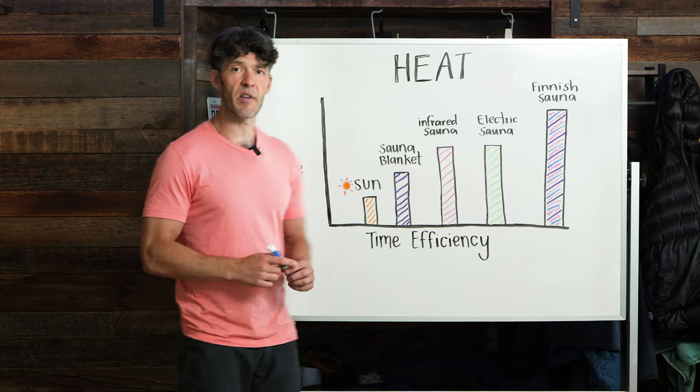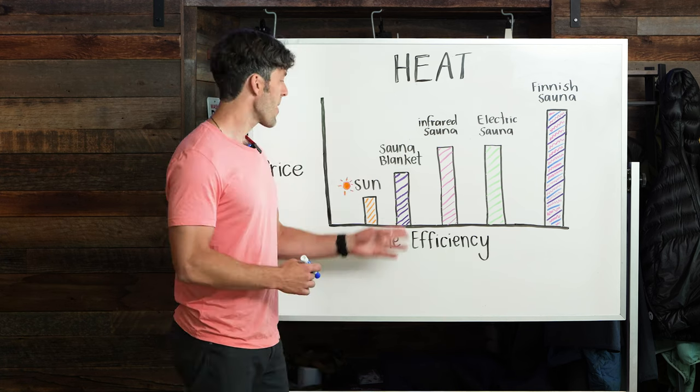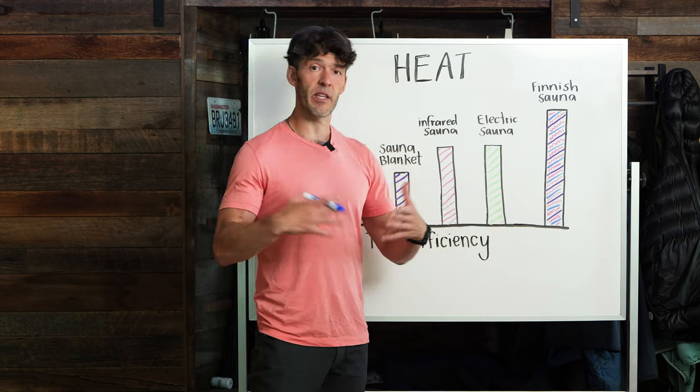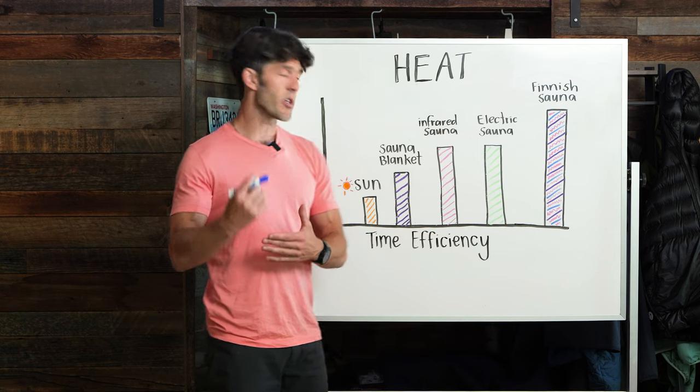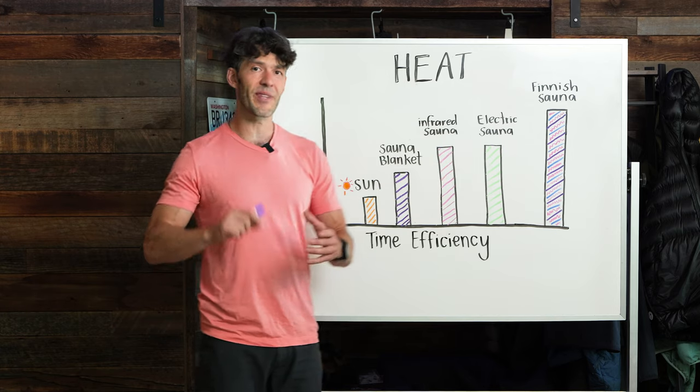What you have here is just the sun, for example, going outside, sweating in the sun, getting hot in your car. Then we have a sauna blanket, we have an infrared sauna, and on the end here we have, and admittedly I'm biased here, I have a classic Finnish sauna, which I used after years of doing an electric sauna and an infrared sauna, and I'll share with you the details here.